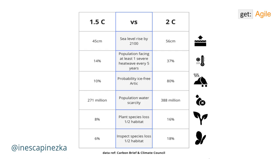For example, let's look at some differences between 1.5 versus 2 degrees of warming — things like sea level rise, heat waves, the full melt of the Arctic, the ability to access water, and habitat loss. All of these have knock-on effects on each other.